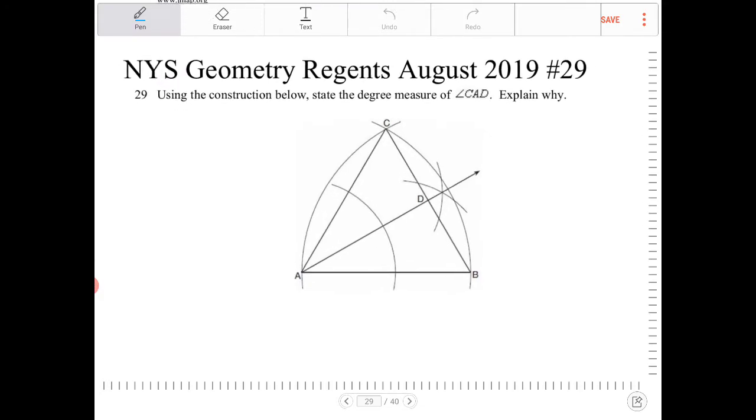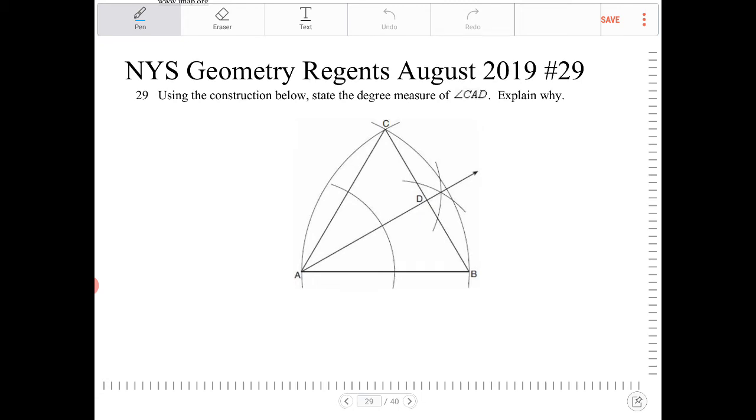Looking at this, the triangle that we have here appears to be an equilateral triangle. And how do I know that? That's because the segment AB looks to be, the construction marks here are indicating that the length of AB is congruent to the length of AC.